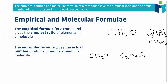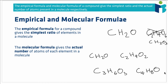However, it could also correspond to a molecule with two carbon atoms, four hydrogens, and two oxygens — scaling up that empirical formula by two. It could also correspond to C₃H₆O₃ or C₄H₈O₄. All of these are possible molecular formulas that correspond to the same empirical formula CH₂O. So the molecular formula gives the actual number of atoms; the empirical formula tells you the simplest ratio.